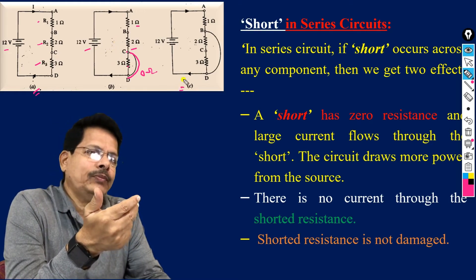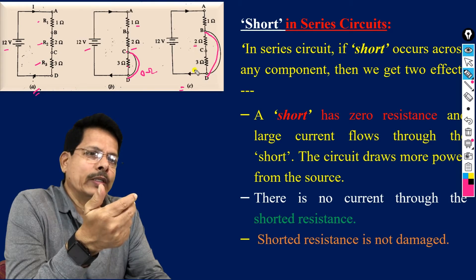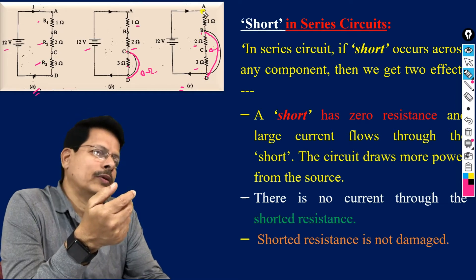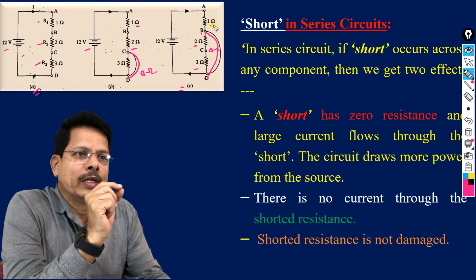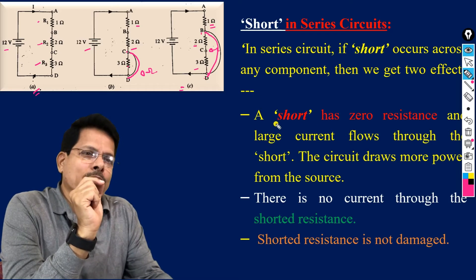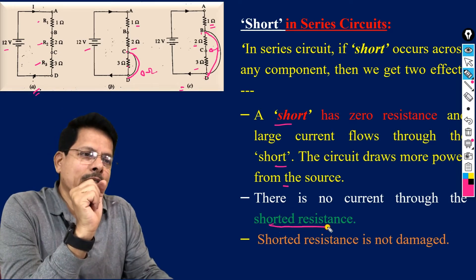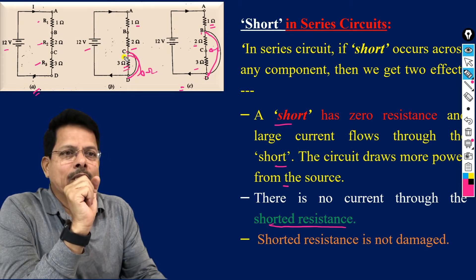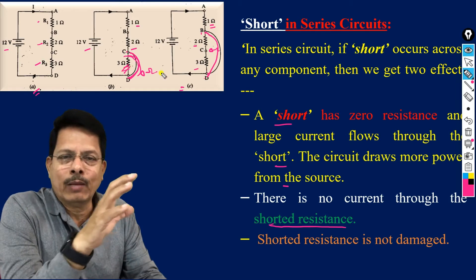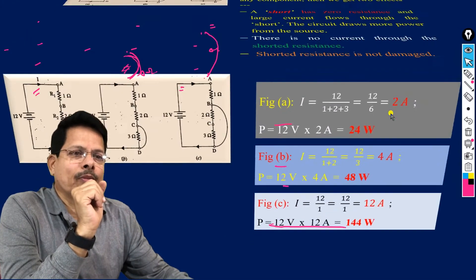More current means more power delivered from the source. In figure C, if there is a short across both the 2 ohm and 3 ohm resistors, only the 1 ohm remains. The current will be very large and power delivered by the source will be very large. A short has zero resistance, large current flows through it, and the circuit draws more power. Note that the shorted component itself is not damaged.